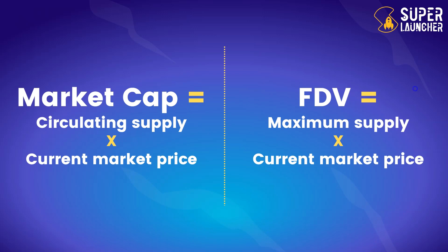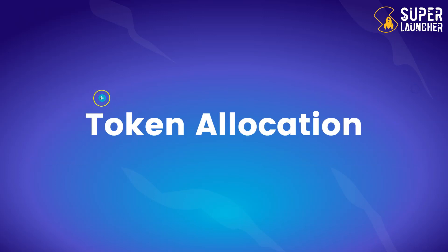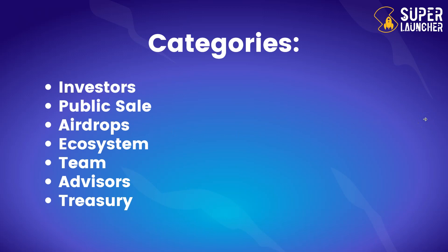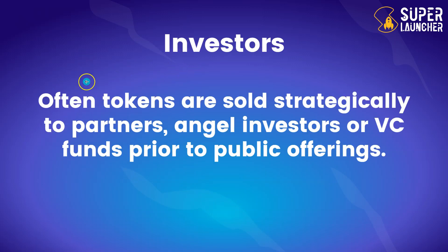Let's now talk about token allocation. There are several main categories — most projects include these. The first categories are: investors, public sale, airdrops, ecosystem, team, advisors, and treasury. Investors: tokens are often sold strategically to partners, angel investors, or VC funds prior to public offerings.